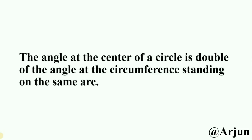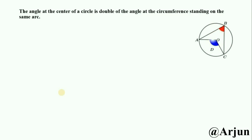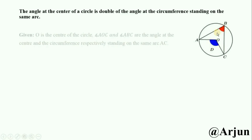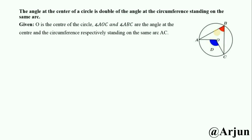Here is a circle with center O. Angle ABC is an inscribed angle and angle AOC is a central angle. The angle made at the center of a circle is called the central angle, and the angle made at the circumference is called the inscribed angle. Given: O is the center of the circle, and angles AOC and ABC are the angles at the center and circumference respectively, standing on the same arc AC.